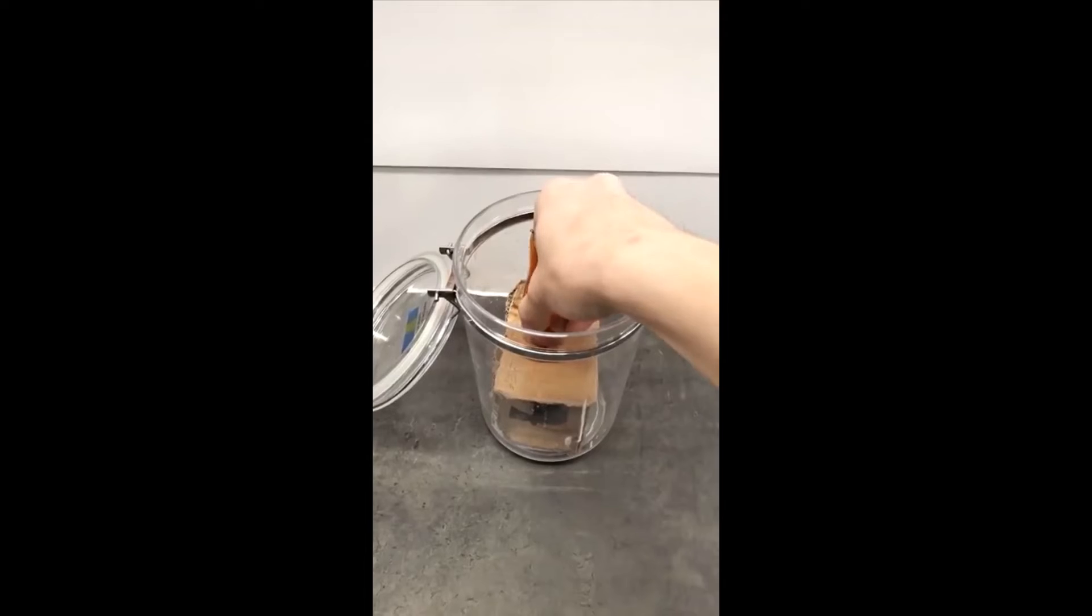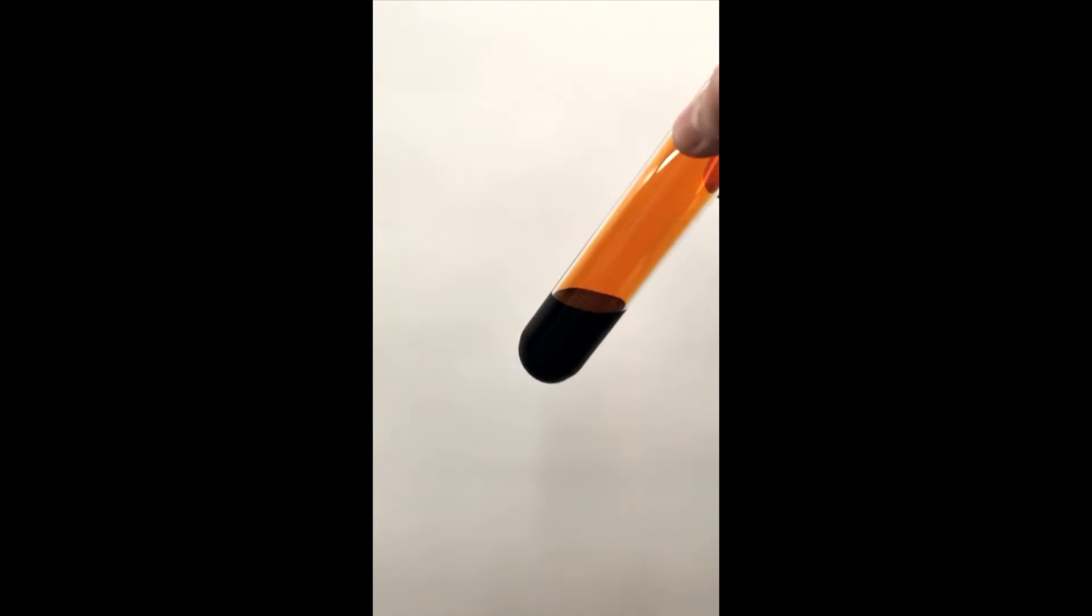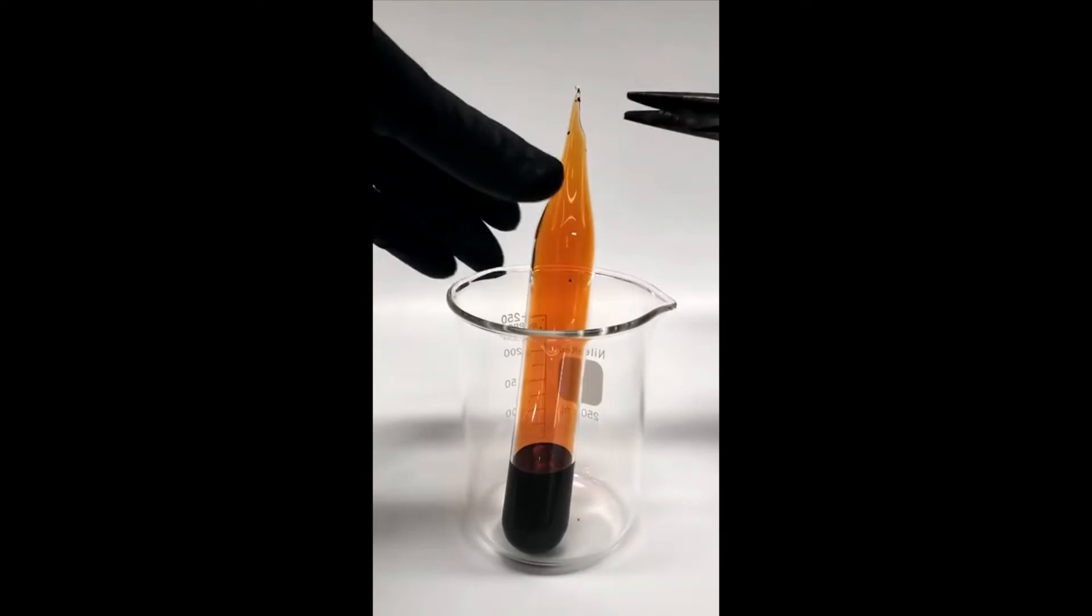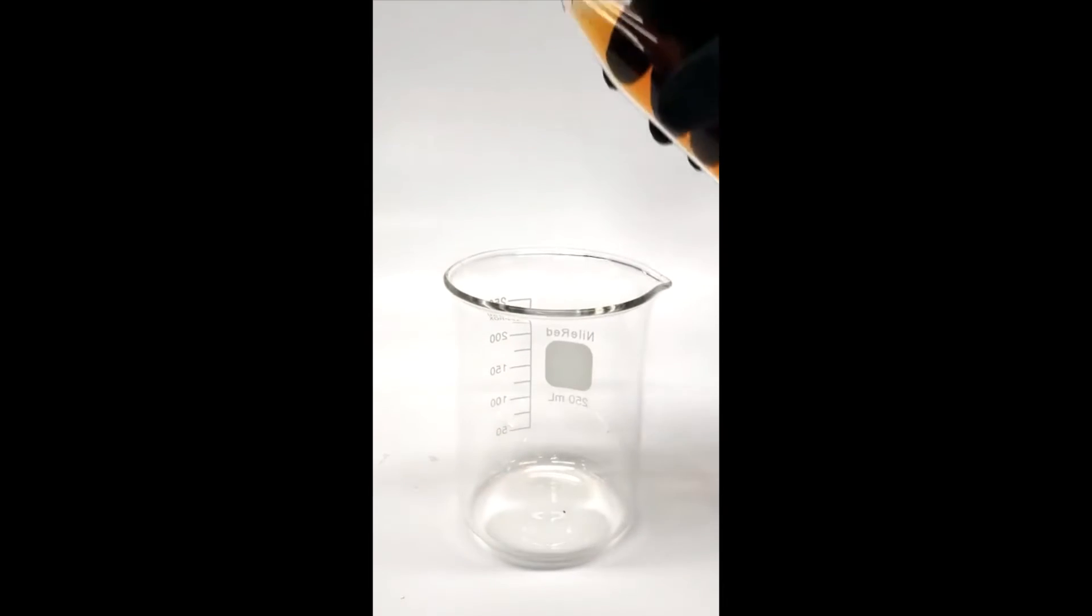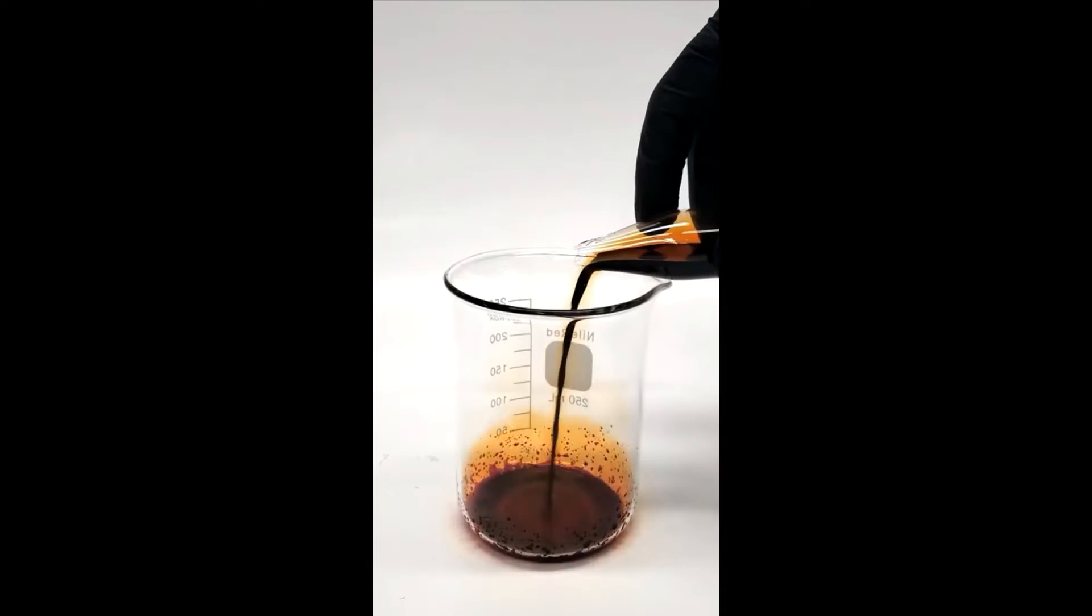This is bromine. It's chemically very similar to chlorine, except chlorine's a gas and bromine's a liquid. It also lets off a lot of nasty orange vapor, and this is why I sealed it in glass.